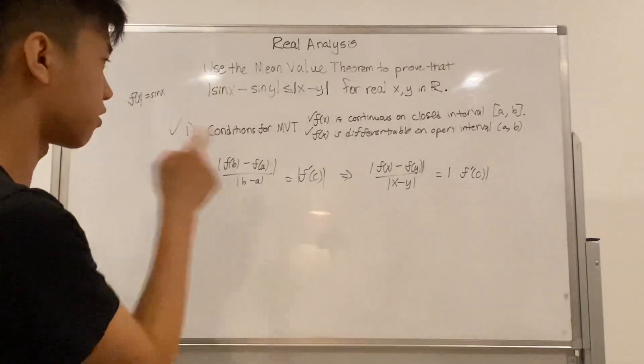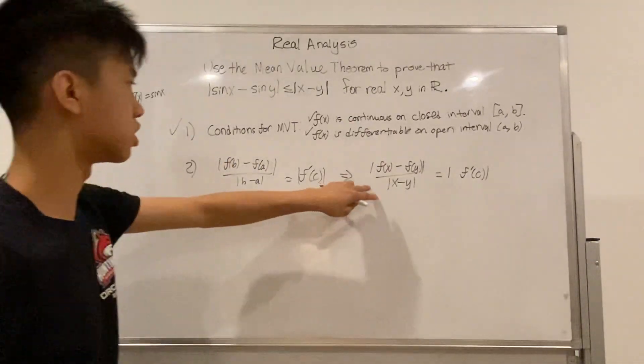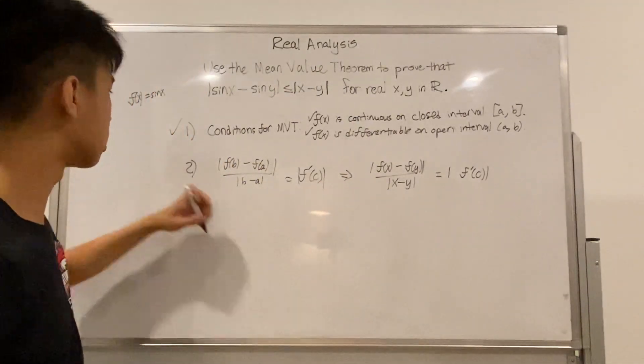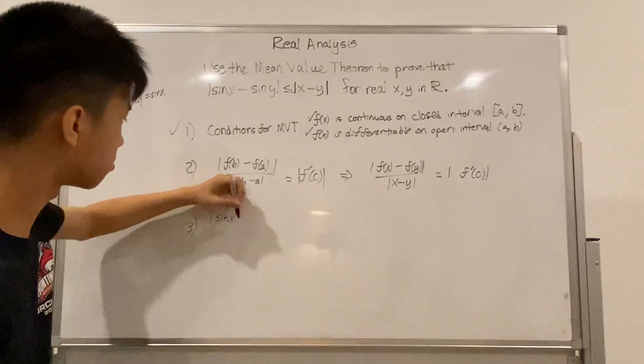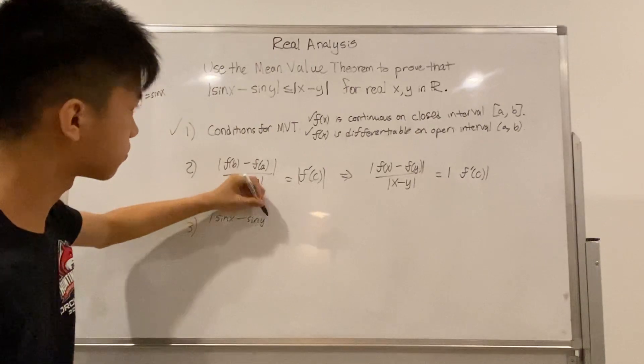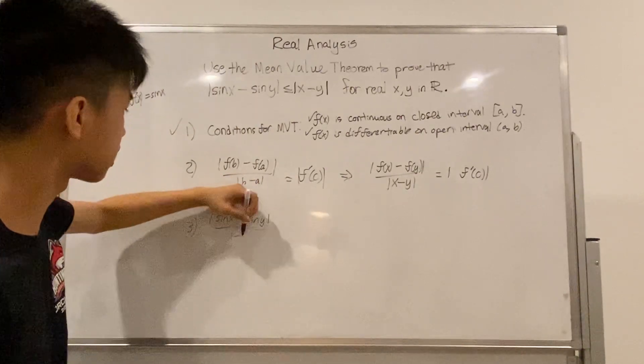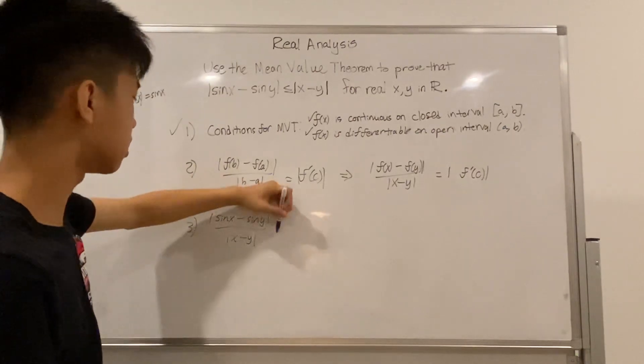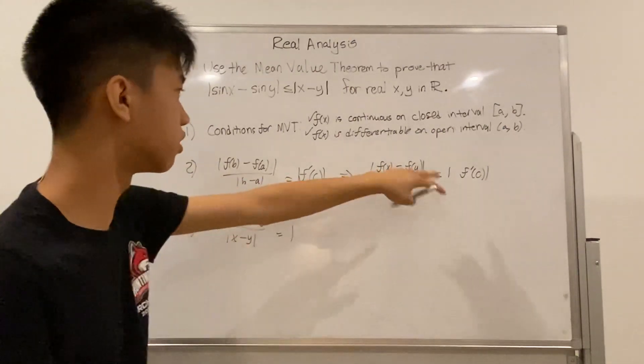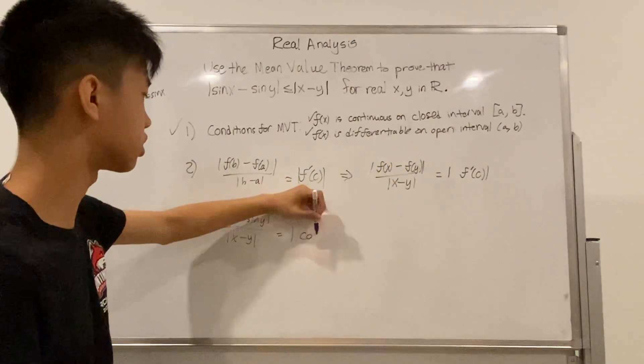So what is f? Well, we know f is sine of x, so we know that absolute value sine of x minus sine of y over absolute value x minus y equals, the derivative of sine is cosine, so cosine of c.